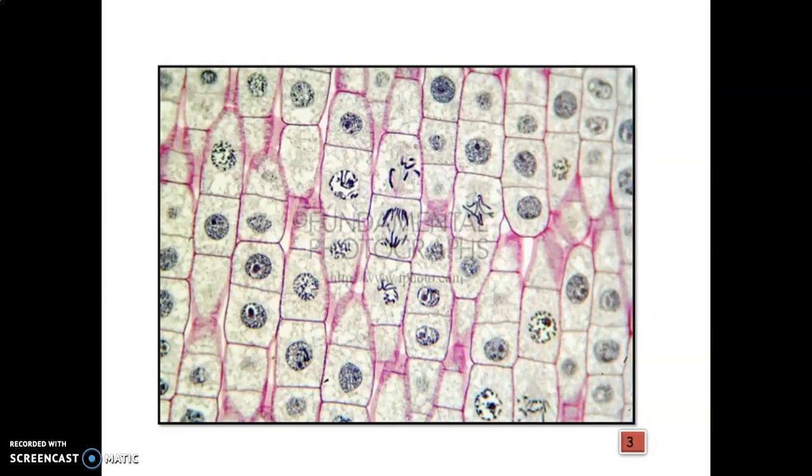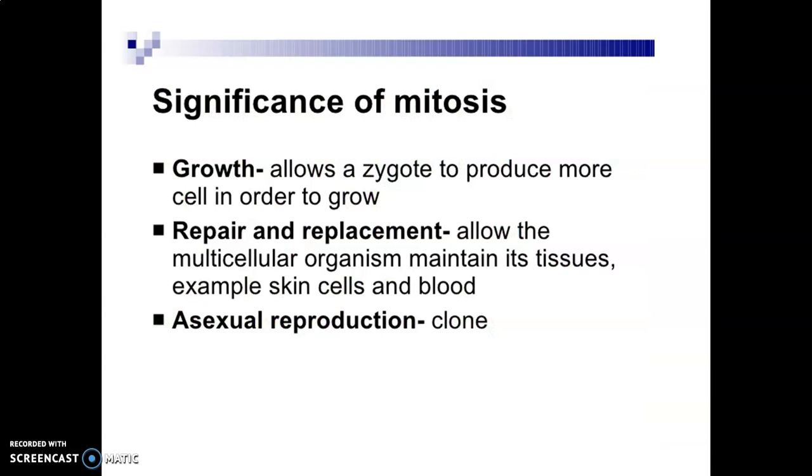Children what is the significance of mitosis? It helps for growth from that single cell zygote. We grow up. And after your growth, repair and replacements are happening day by day. For example, every 120 days new RBCs are formed in your blood. Then asexual reproduction, for cloning it is required. So these are the significance of mitosis.